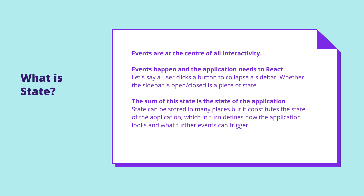Every interactive app involves responding to events, like when a user clicks a button and the sidebar closes, or someone sends a message and it appears in a chat window. As these events happen, the app is updated to reflect them — we say this is updating the application state. In programming terms, you probably have an isSidebarOpen variable somewhere in your application set to true, and a chat messages array with messages you've received.